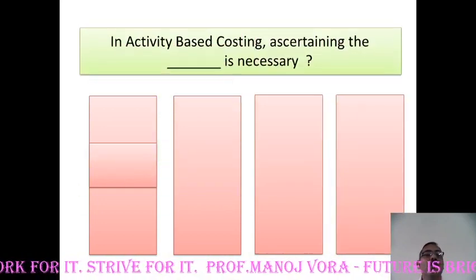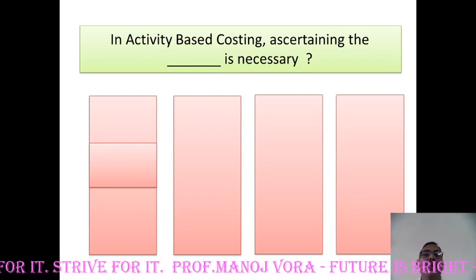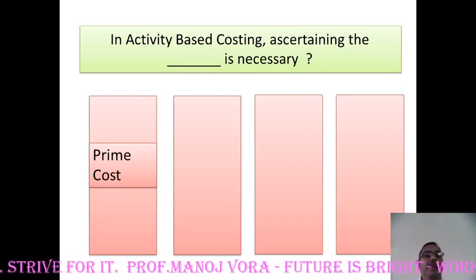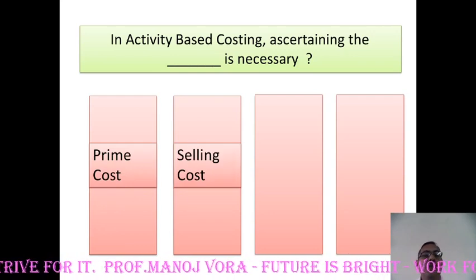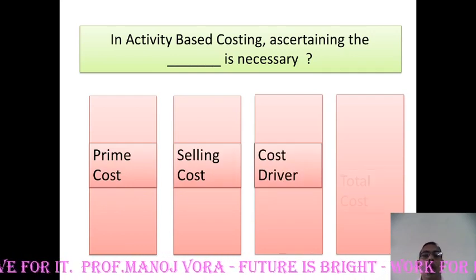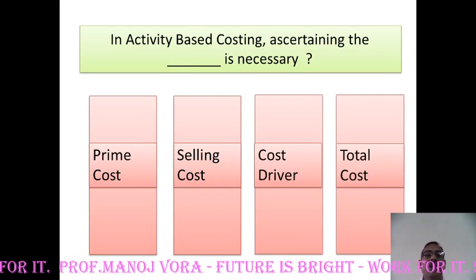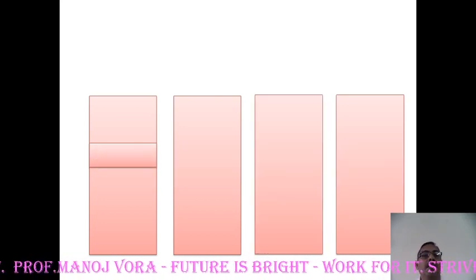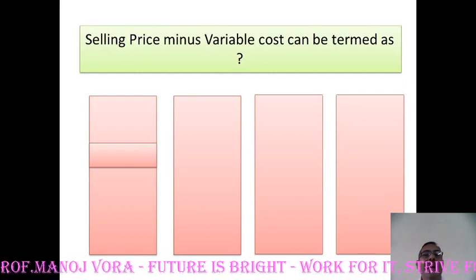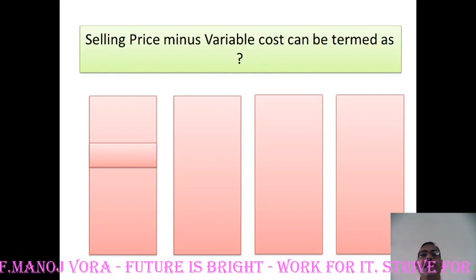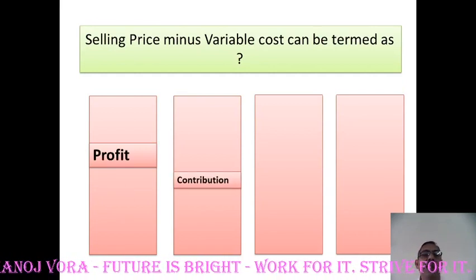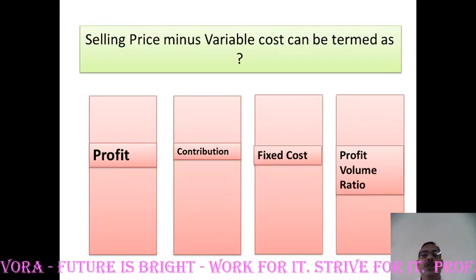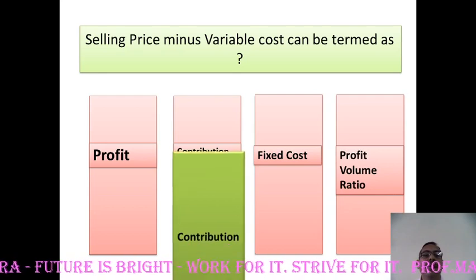The next question: in activity based costing, ascertaining the dash is necessary. The options are prime cost, selling cost, cost driver, and total cost. Your right answer has to be cost driver. The next question: selling price minus variable cost can be termed as profit, contribution, fixed cost, or profit volume ratio. Your answer has to be contribution.